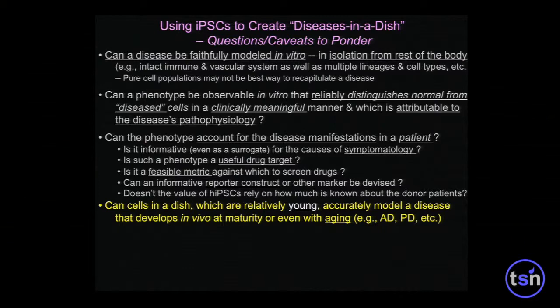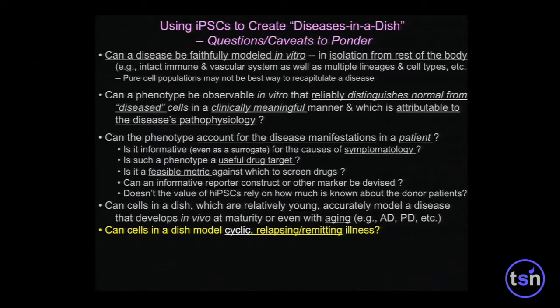What about the issue that the cells we get are inevitably young cells, but very often we want to model diseases of aging and maturation — for example, Alzheimer's disease and Parkinson's disease? Or can we model diseases that have a cyclic, relapsing, remitting character? Does the act of culturing and certainly reprogramming change the disease? For example, if you alter telomere lengths in the course of reprogramming, do you actually lose the very thing you're trying to model?